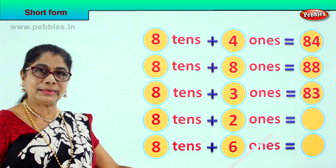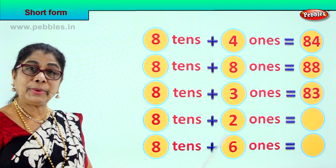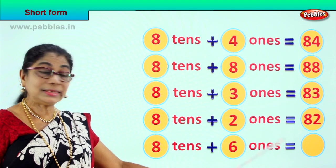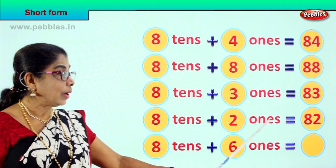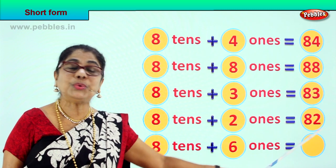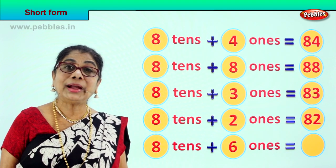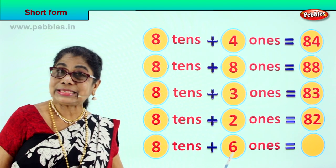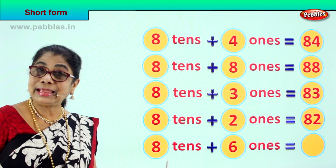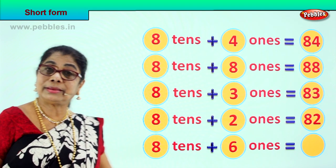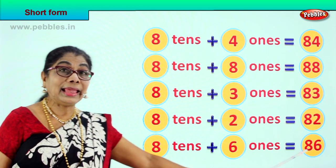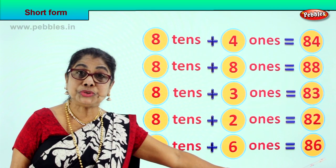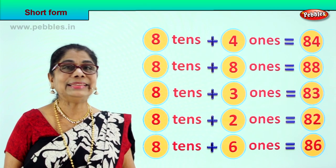Eight tens plus two ones. Eight tens plus two ones is equal to eighty two. Eight and two, eighty two. Good. Eight tens plus six ones. That is eight tens plus six ones is equal to what? Eighty plus six, eighty six. Eight tens plus six ones is equal to eight and six, eighty six.